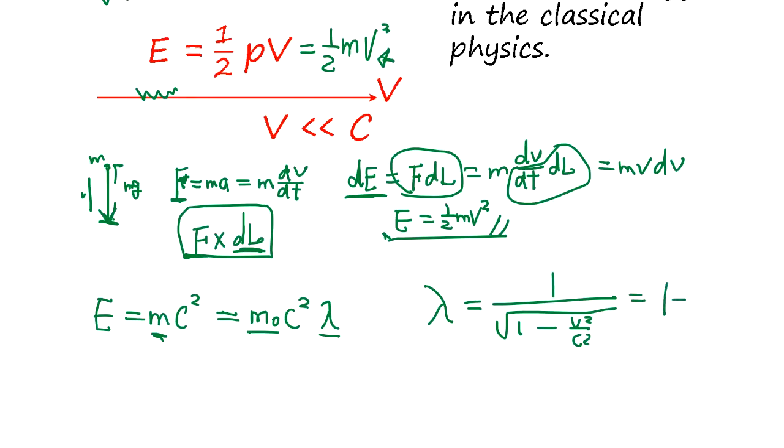And that turns out to be 1 minus x to the minus 1 over 2. Now here x is very small in classical physics. So you can expand this into a series. Whatever, this is too small.